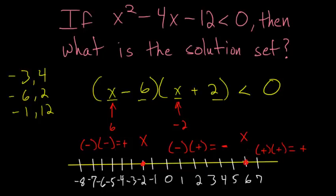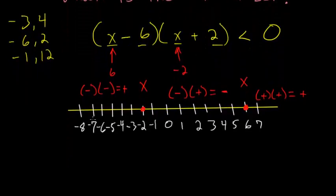Though they don't include the endpoints of negative 2 and 6 since it has to be less than 0, not equal to 0. So we can say that our answer is that x would have to be smaller than 6 and bigger than negative 2.